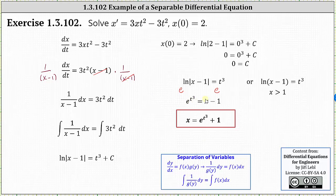The last step to solve for x is to add one to both sides of the equation, which gives us x of t equals e to the power of t cubed plus one for the particular solution. I hope you found this helpful.